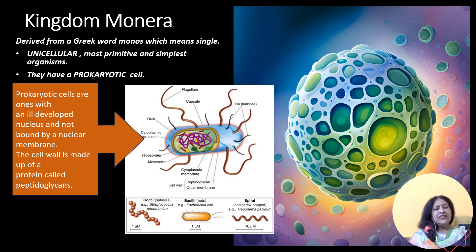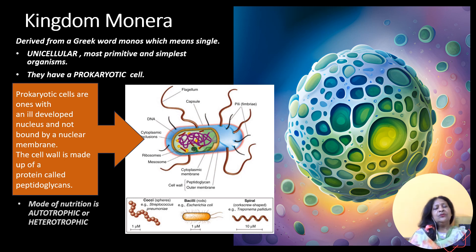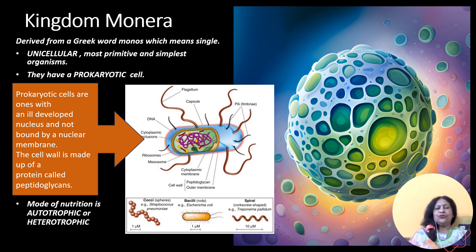Some of the representatives can be spherical called cocci, others rod shaped called bacilli, and the last spirellum in a spring form. The mode of nutrition for the representatives of Munera are either autotrophic or heterotrophic.